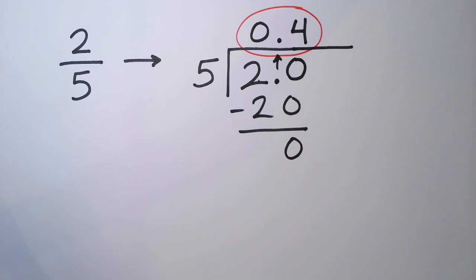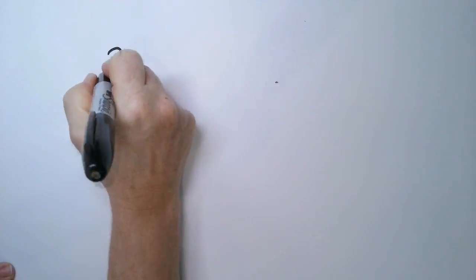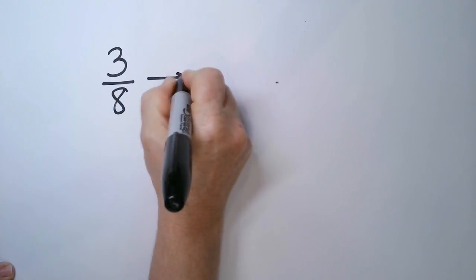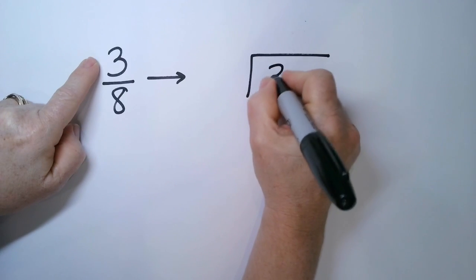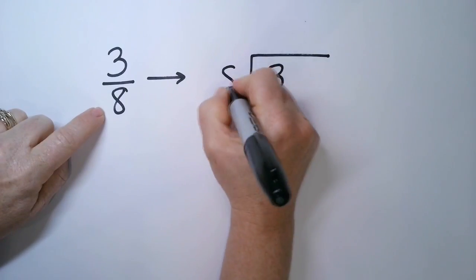Let's try another one. I have 3 eighths. So inside the box goes the numerator, outside the box goes the denominator.